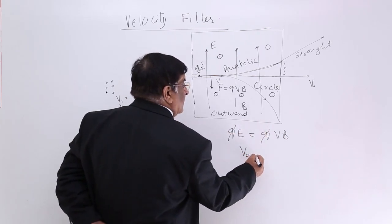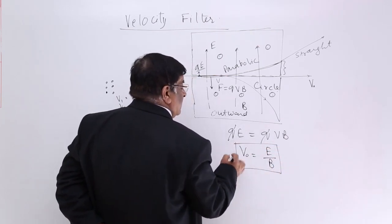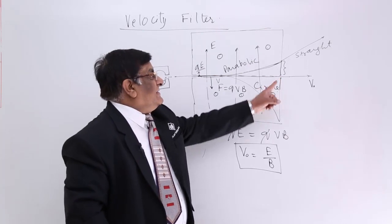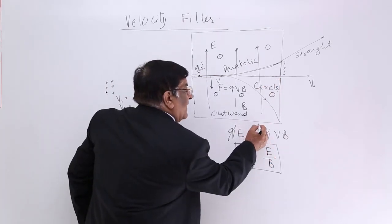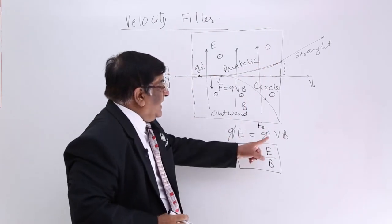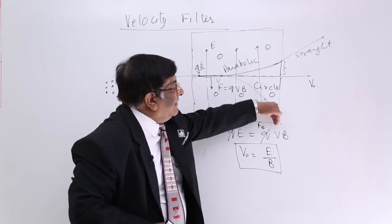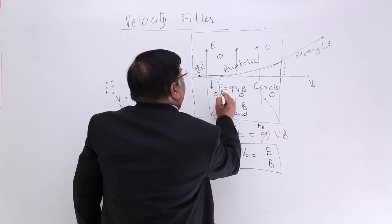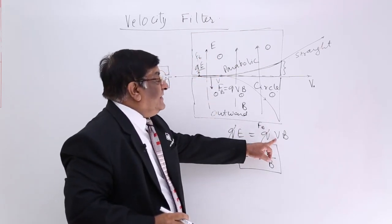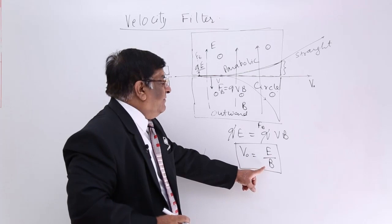So this velocity is equal to E divided by B for this particular charge which is going here. If velocity becomes less, this force magnetic will become less and the particle will go up. If velocity is higher than this, then this force FB will be higher and it will go down because of FB. This is FE. So for a particular velocity both the forces are equal and how much is that velocity? E divided by B.